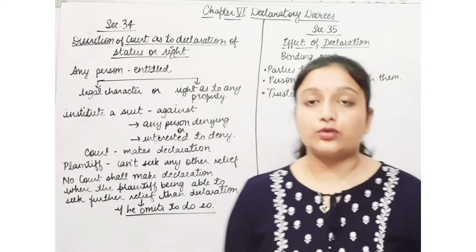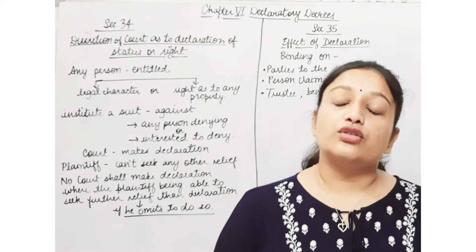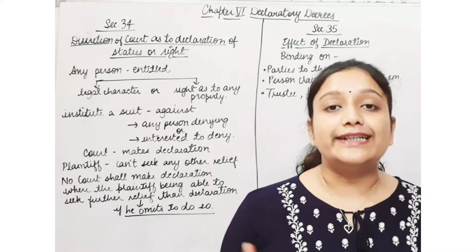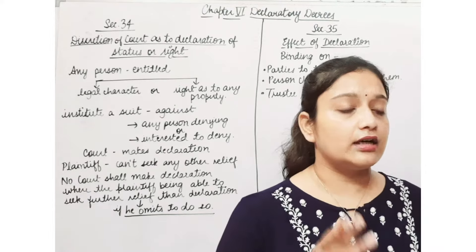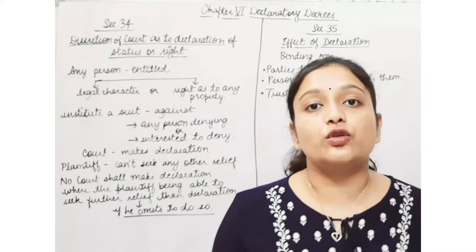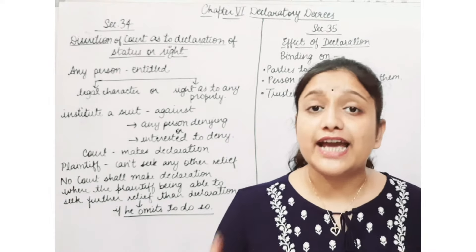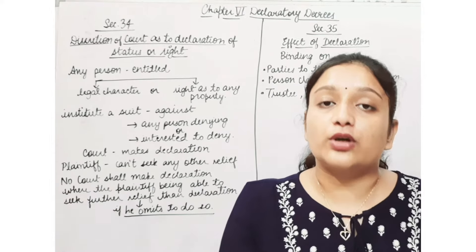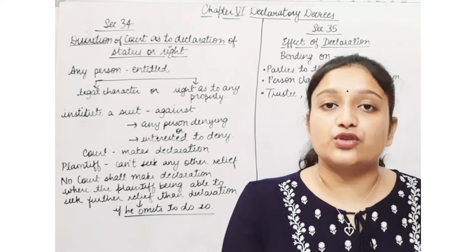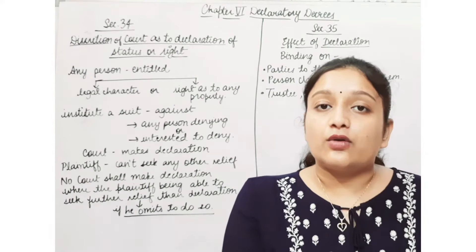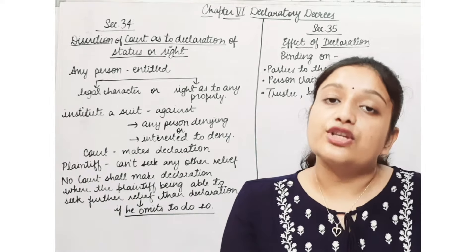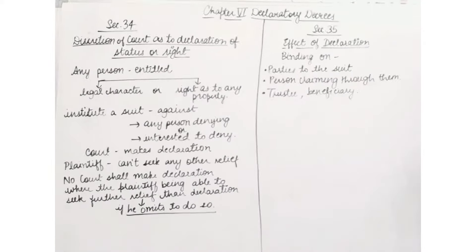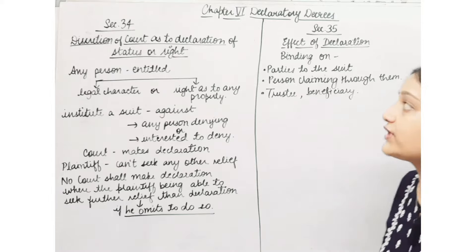The Declaratory Decree is necessary to understand what is happening. When someone has a legal character and seeks a declaration of that legal character, or when someone has a right to declare that a property of a certain person belongs to that person, the court issues a declaratory decree. Section 34 says: Discretion of court as to declaration of status or right.